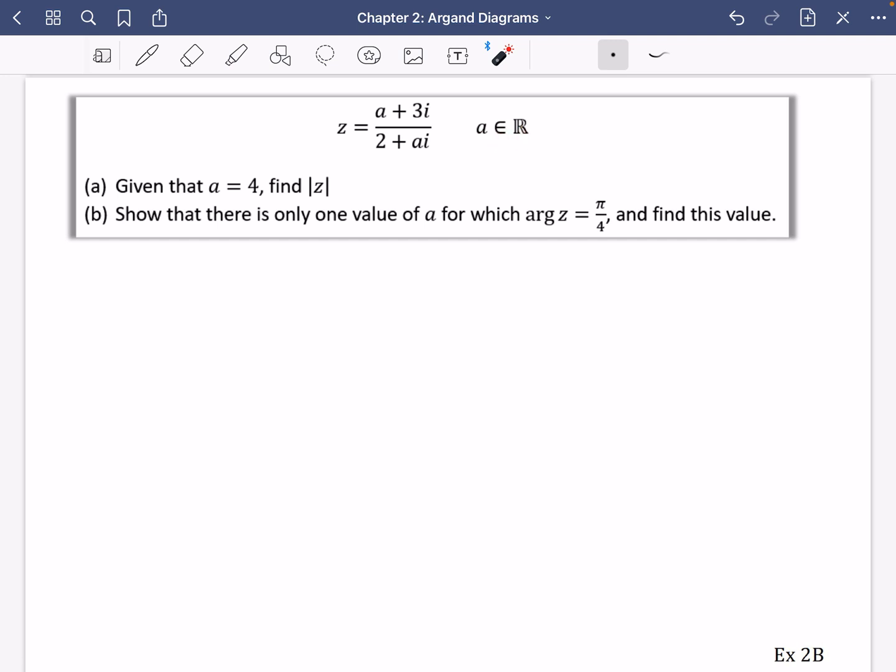So first of all, it says given that a equals 4, find the modulus of z. Well, this is one actually where if you've been told that it's equal to 4, you can actually just use your calculator and just dive in straight away with this one. We could just say that z is equal to 4 plus 3i divided by 2 plus 4i.